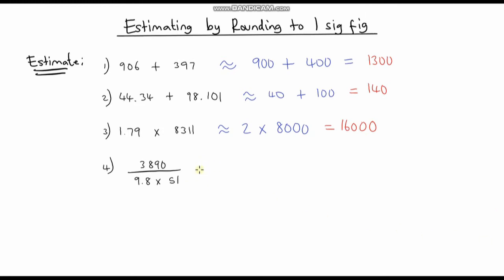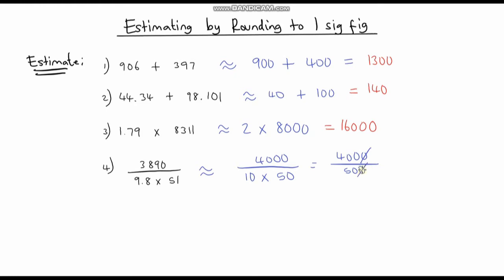The last example: this is approximately equal to the numerator rounded to 4,000, divided by the denominator where 9.8 rounds to 10 and 51 rounds down to 50. So we've got 4,000 divided by 10 times 50, that is 500. What is 4,000 divided by 500? We divide numerator and denominator by 10 twice, leaving us with 40 divided by 5, which is 8.